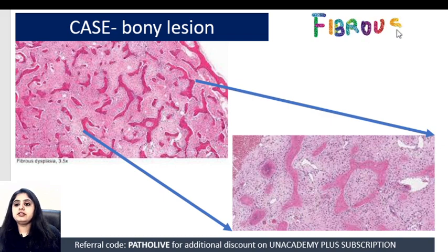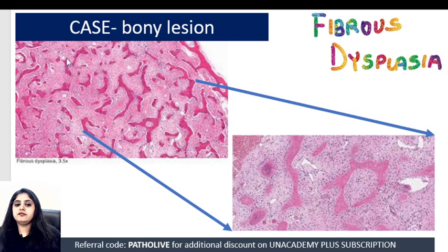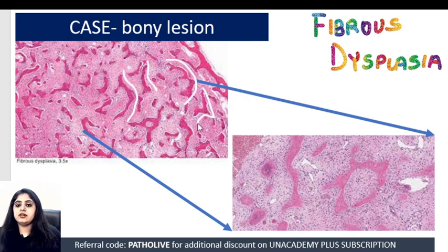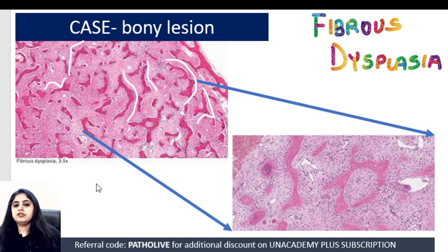How did I identify this as fibrous dysplasia? The first and most characteristic finding is that the bony trabeculae are all weirdly shaped — they look like Chinese letters. They are curved, taking alphabetical shapes. I call them Chinese letter pattern: they look like a C, or an S, or some random Chinese alphabet. First and foremost, I see a Chinese letter appearance.